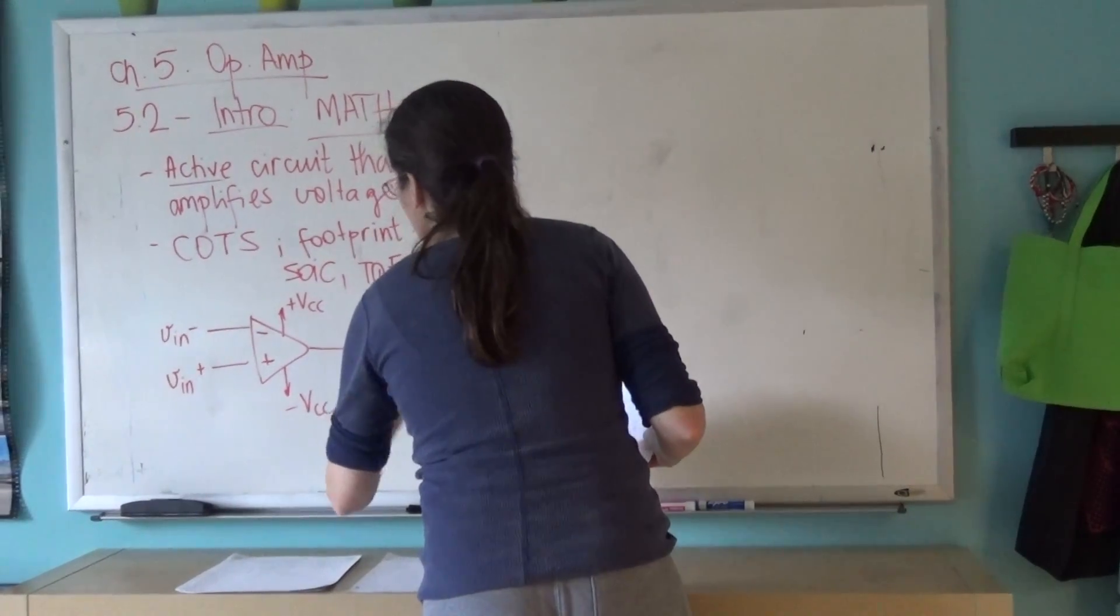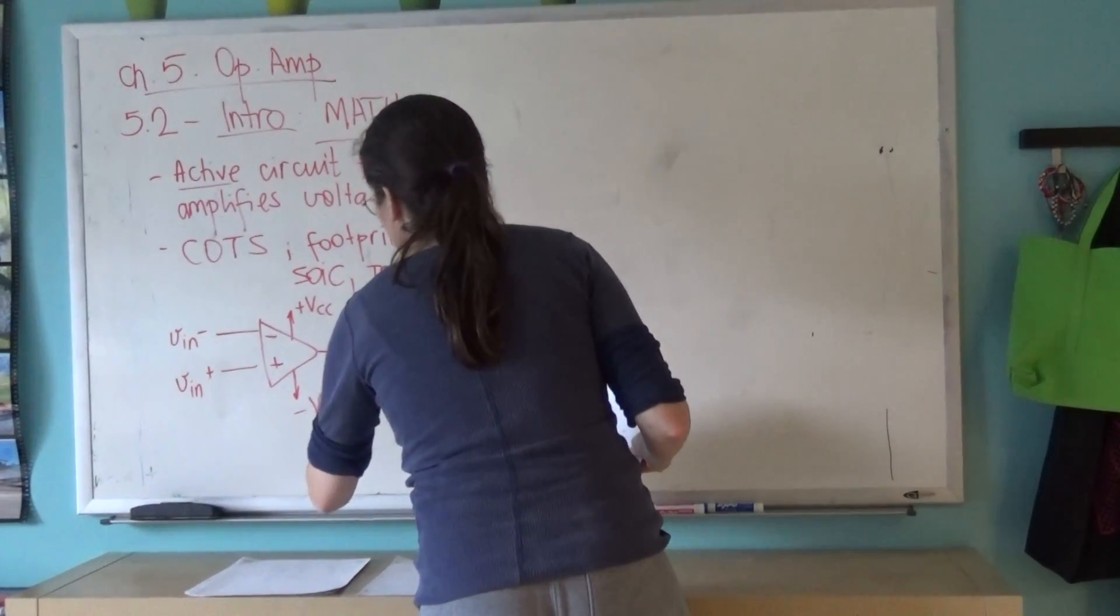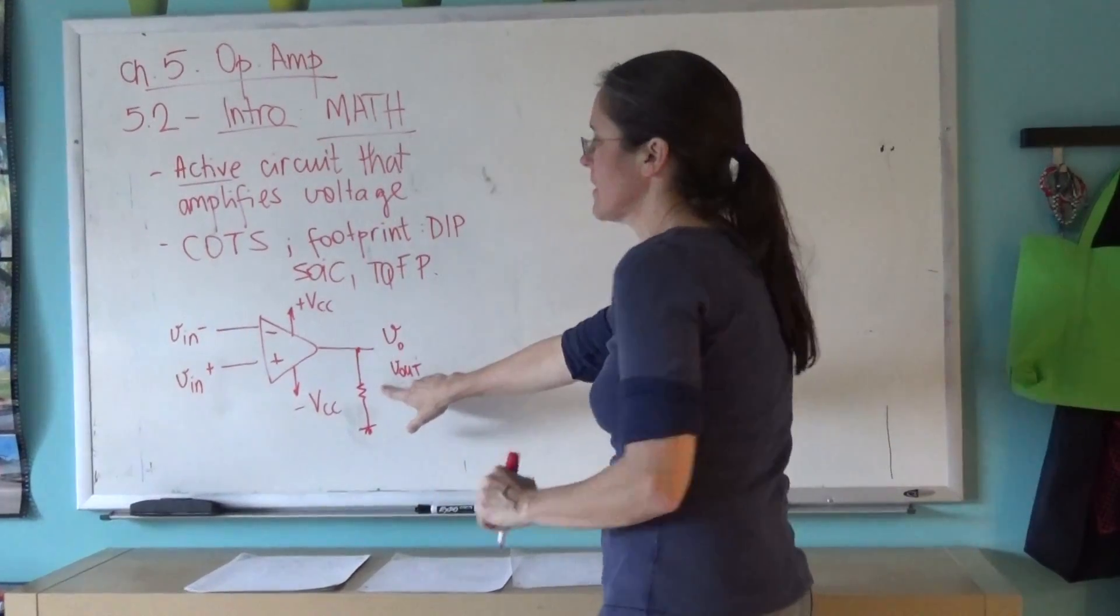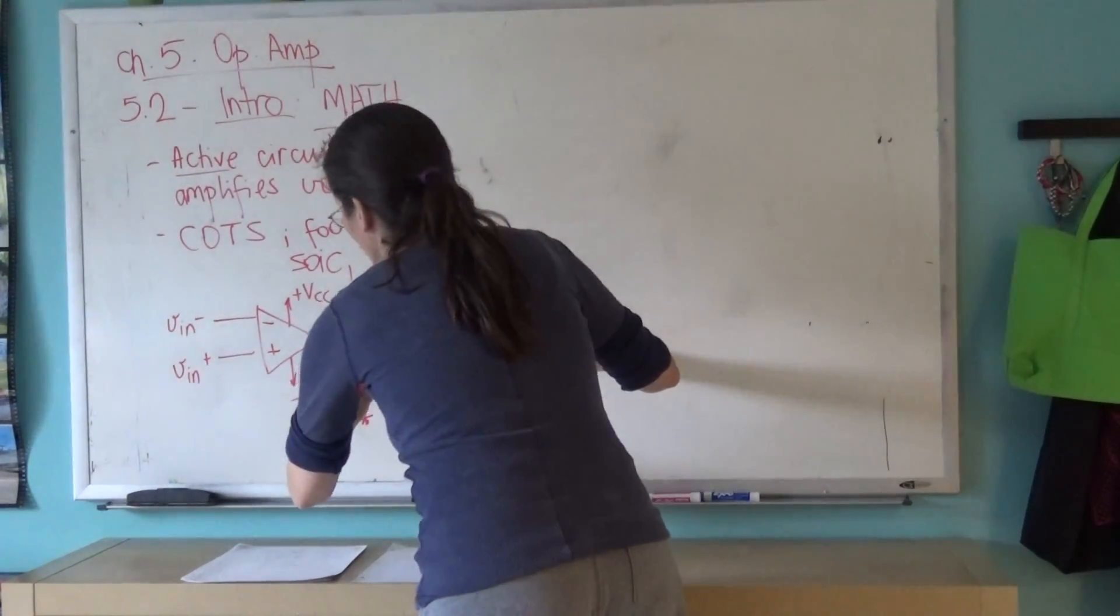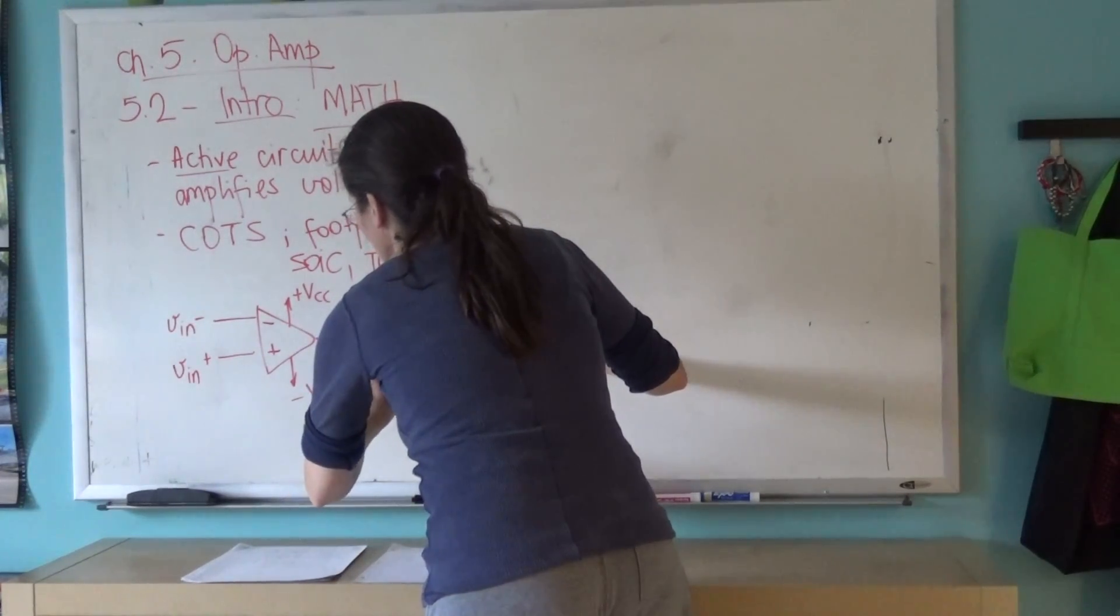Usually we would hook up a load to it—for example, a resistor—that we're interested in amplifying this difference in voltage to make a current go through the load resistor.